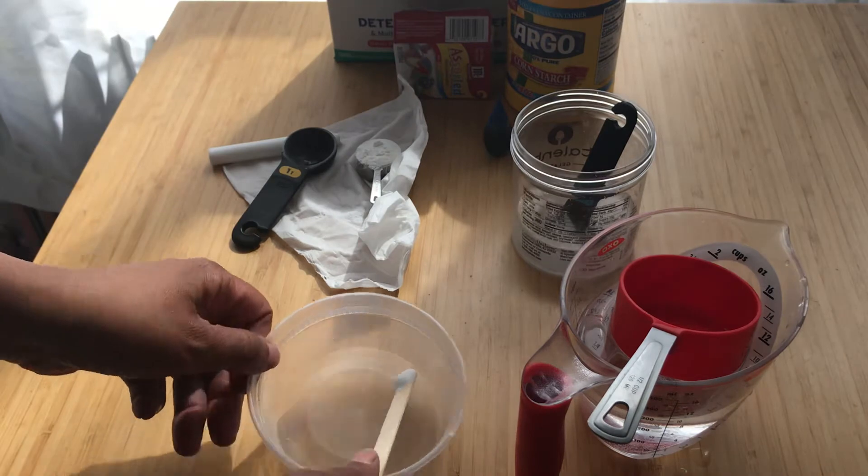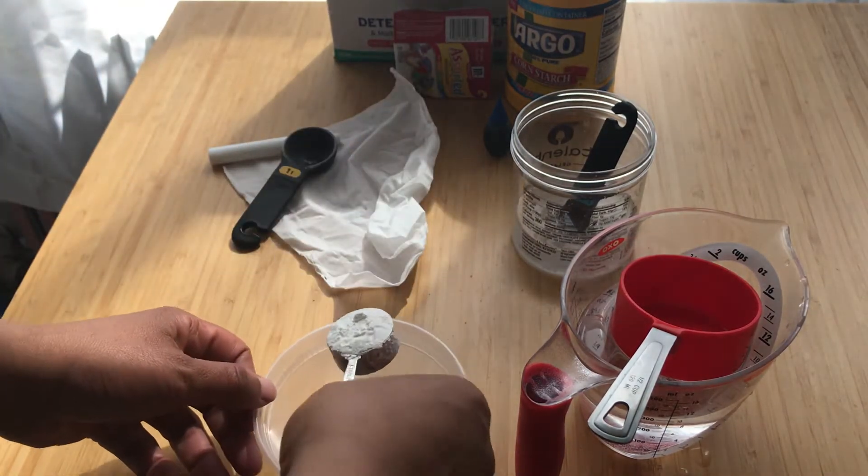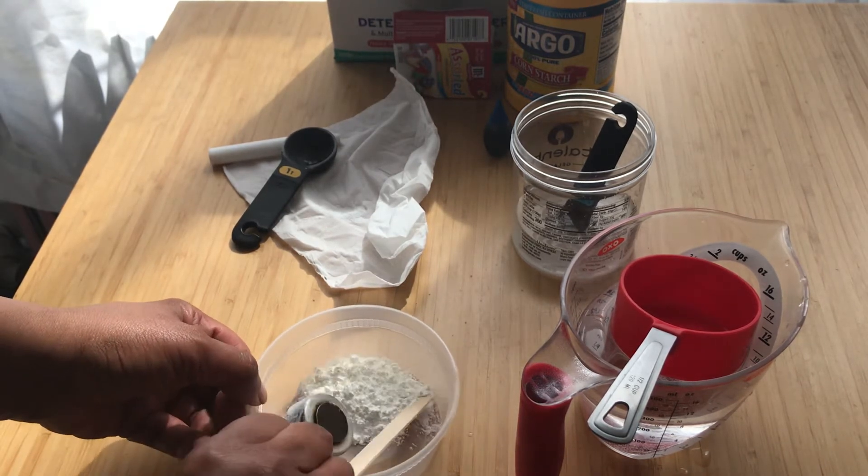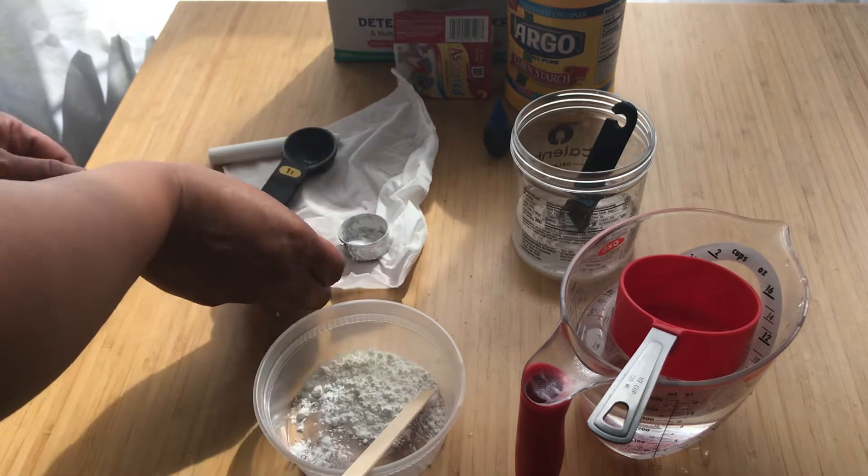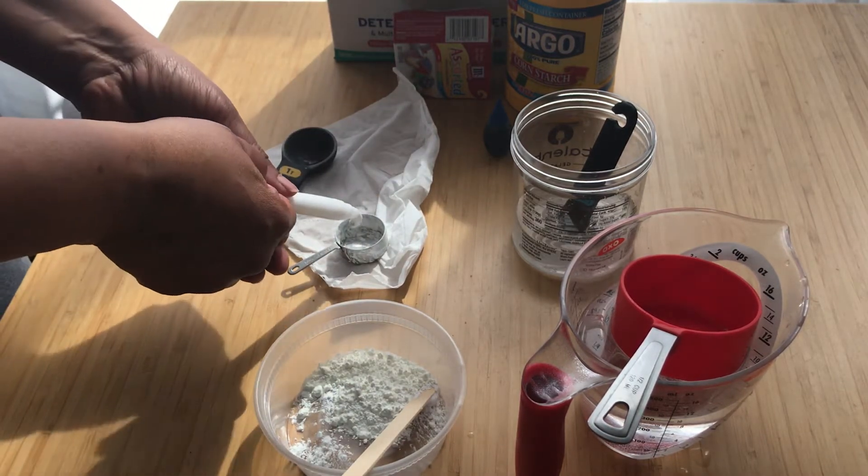In another container, I'm going to combine one tablespoon of cornstarch and two tablespoons of white glue.